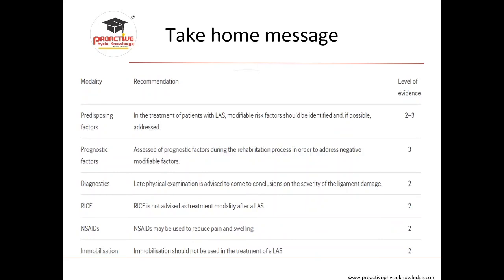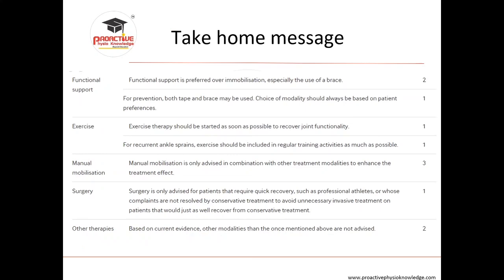For the take-home message: RICE has level two evidence; NSAIDs for reducing pain and swelling have level two evidence; immobilization also has level two evidence. We should understand which treatments have a good role for lateral ankle sprain. Do not give ultrasound or kinesio tape alone without exercise. The summary is: start exercise as soon as possible, incorporate it into functional tasks, and improve proprioception — this helps athletes and the general population prevent chronic ankle instability.